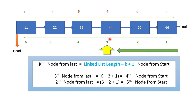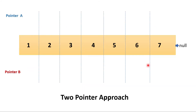With this approach, to find the third node, you first traverse six times to get the length, then traverse four more times to reach the target — that is ten rotations total. We will now see if there is a better approach.